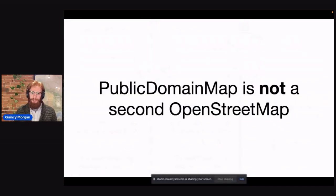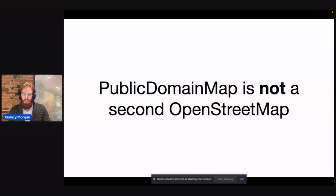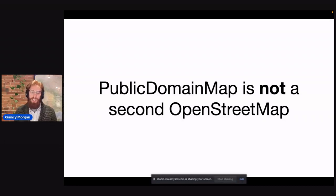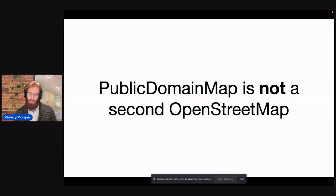To be clear, Public Domain Map is not a second OpenStreetMap. The data is not persistent — it doesn't live forever. You can't just edit any kind of data. We run it through Tasking Manager, so it's only tasks that certain agencies are interested in getting crowdsourced — that's the only data that lives in Public Domain Map.